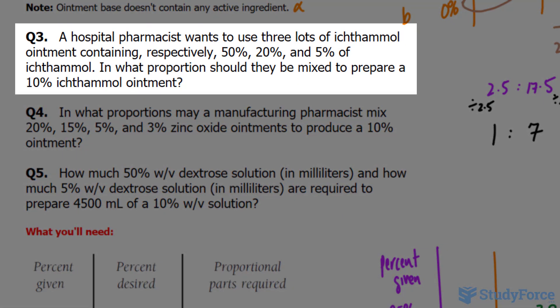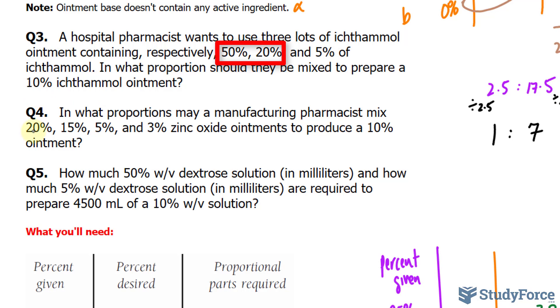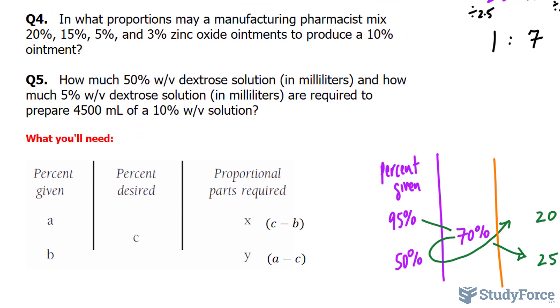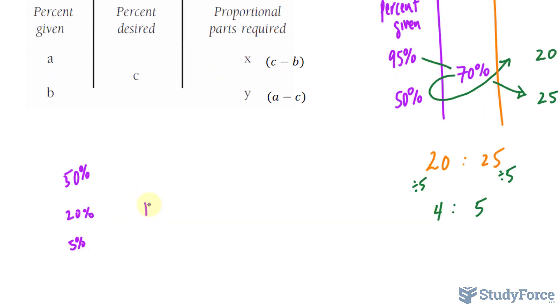So the question reads, a hospital pharmacist wants to use three lots of ichthammol ointment containing respectively 50%, 20%, and 5% of ichthammol. In what proportion should they be mixed to prepare a 10% ichthammol ointment? We have two that are greater than the desired strength, and one that's less. In order for us to get a 10% strength, we need to mix together one of the strong ones with the weak one.